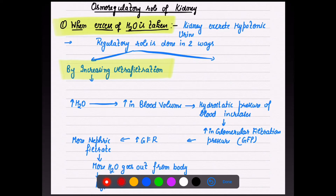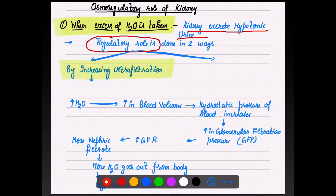When excess water is taken into our body, the kidneys start excreting hypotonic urine. This regulatory function can be explained in two ways. The first is by increasing ultrafiltration. Let's understand with the help of a flowchart.